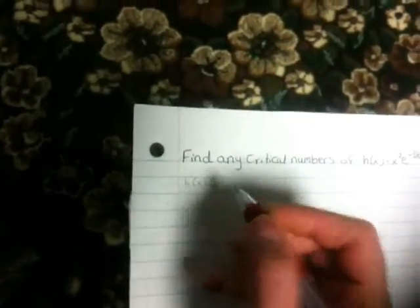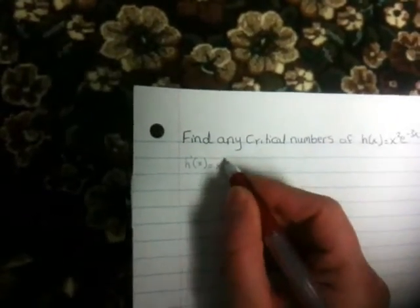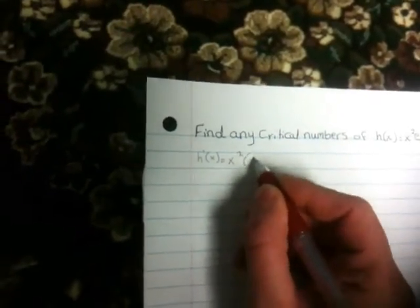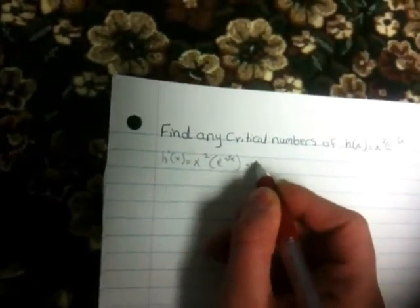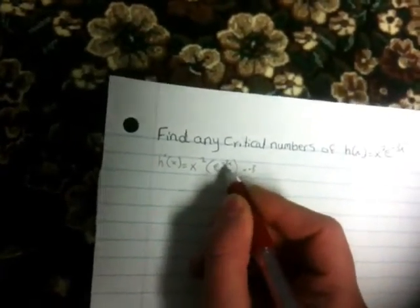First thing, we will find the first derivative, which is h'(x) equals. We will keep the first one and we will take the second one's derivative, which is times negative 3. We take it from e.